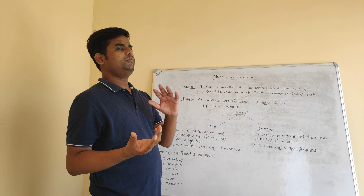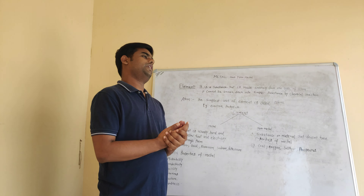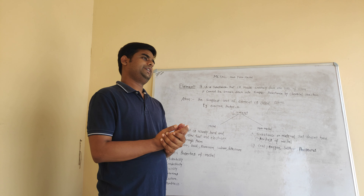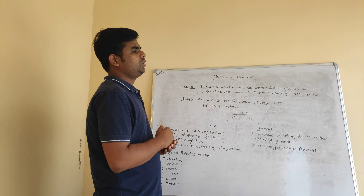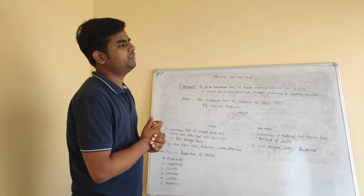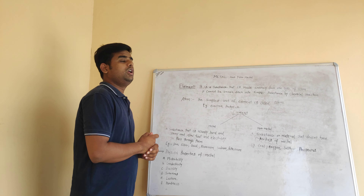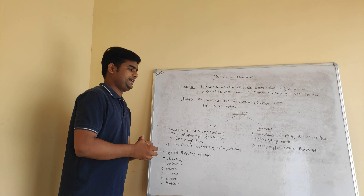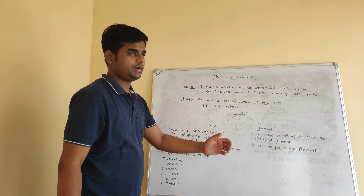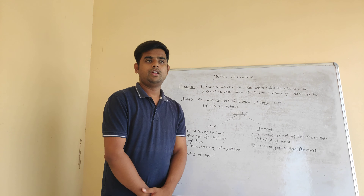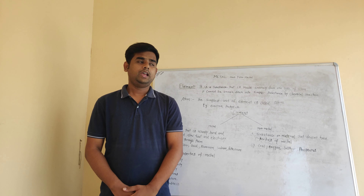How do we divide the elements? We divide the elements into two types. The first one is metal and the second one is nonmetal — so, metal and nonmetal.